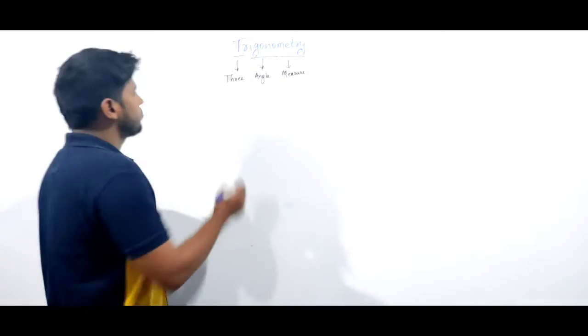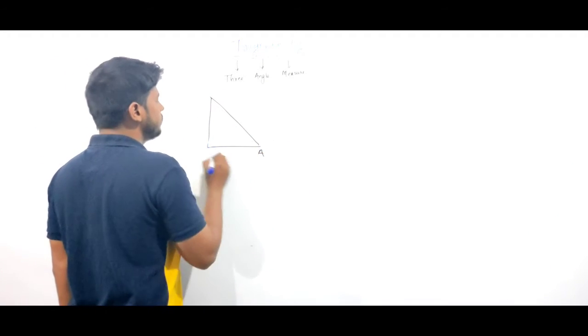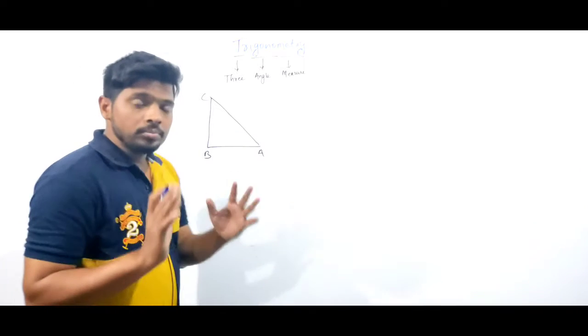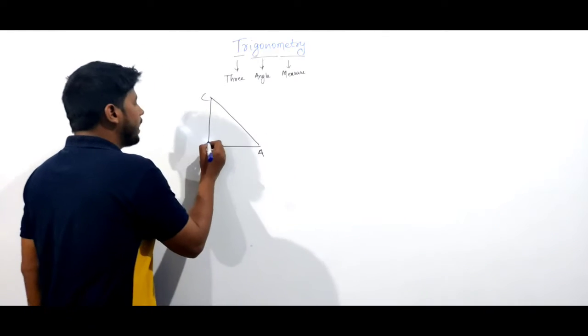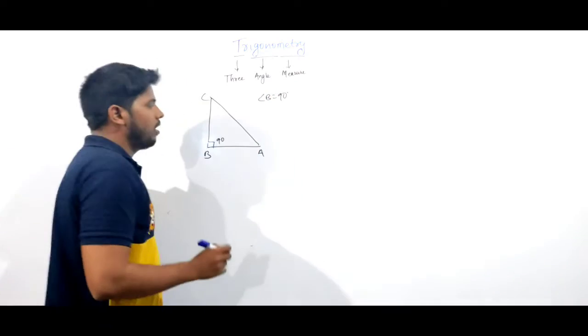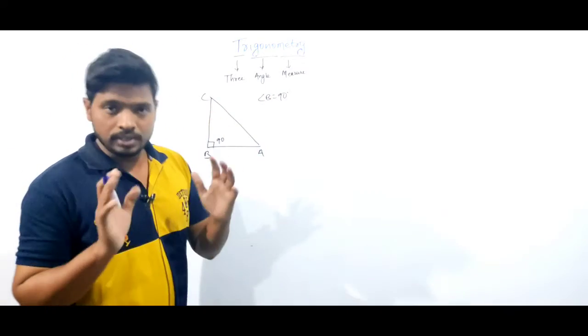Let us suppose we have a triangle A, B, C. Then suppose angle B is 90 degrees. And suppose angle A and angle C are acute angles.